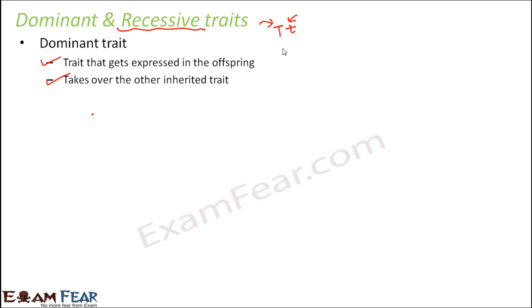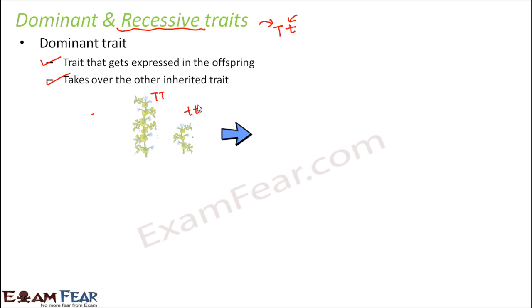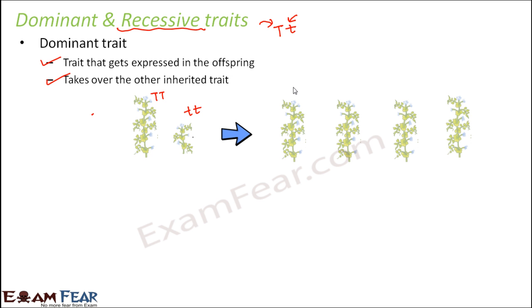For example, capital T is dominant over small t. The trait which is dominant here is tall, so the tall trait is dominant over the dwarf trait. That is why the tall trait gets expressed and in the F1 generation all individuals are tall. So that is a simple example of dominant trait — capital T capital T crossed with small t small t gives all tall offspring.